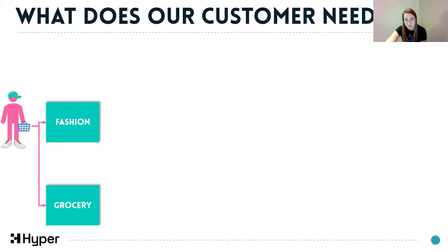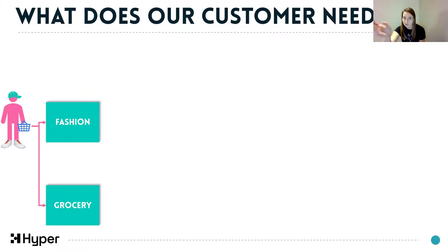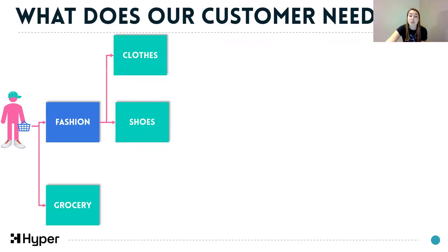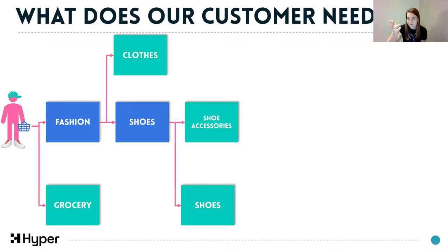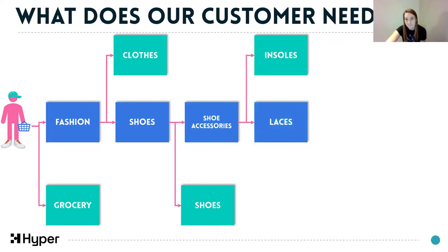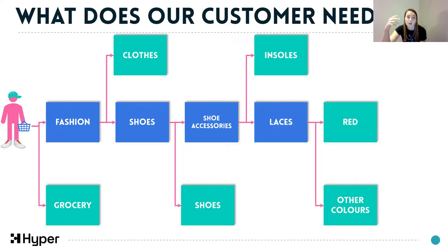Here's another example using Hyper Harry. He's entered our online store and his end goal is to buy the red shoelaces - that's his customer need state. The first decision is: does he want to shop fashion or grocery? We know he wants fashion. Next: clothes or shoes? He's after laces, so shoes. Then: actual shoes or accessories? Laces are accessories. Then: insoles or laces? Laces. And finally: red or another colour? Red. So he's now reached his customer need state.